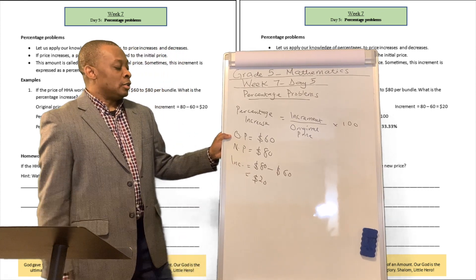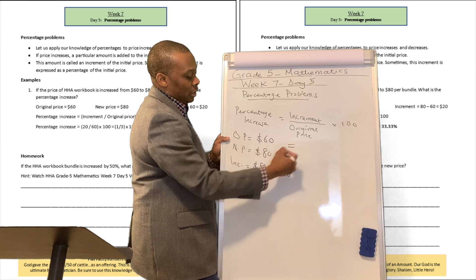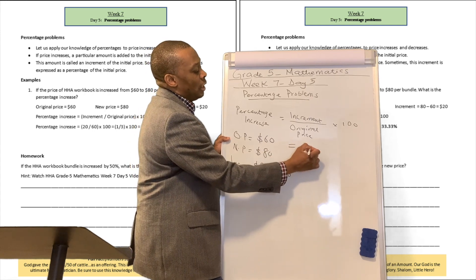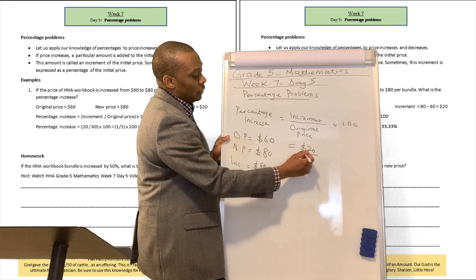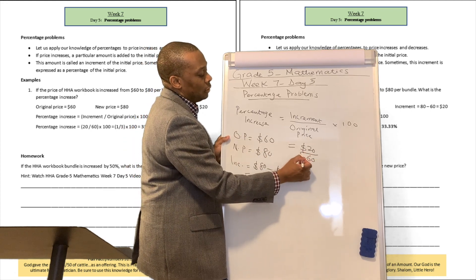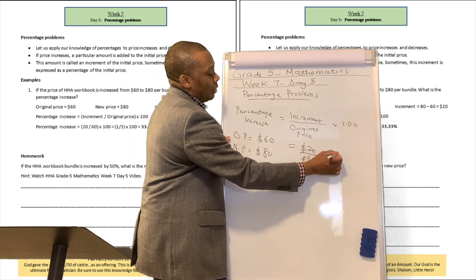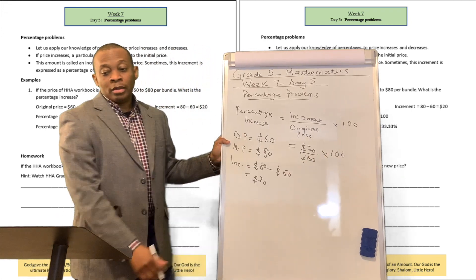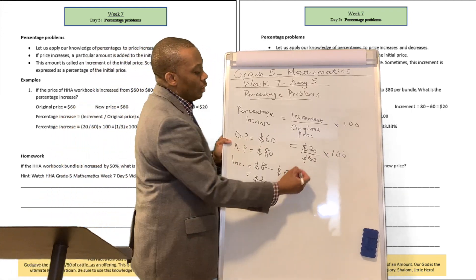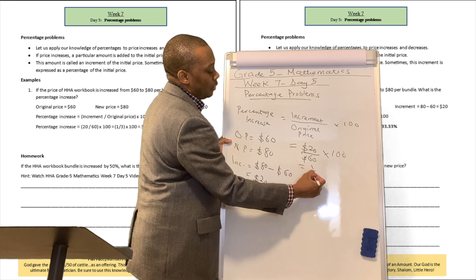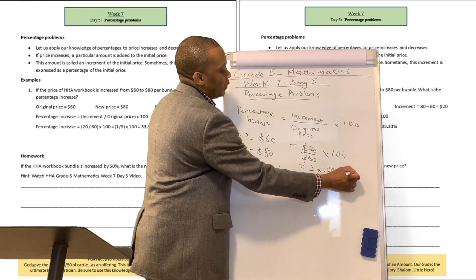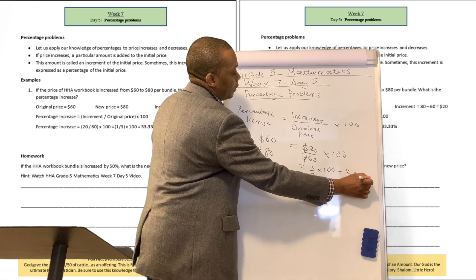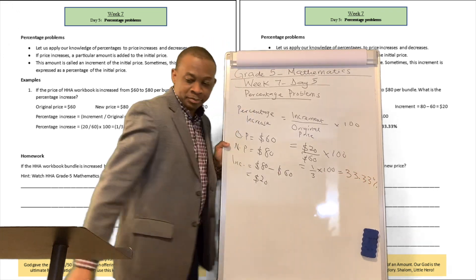All right, so we're going to plug all these figures into this formula. Increment is going to be equivalent to $20 divided by the original price, OP, which is $60, and then multiply it by 100. Okay, and when you do that, that's going to be one-third times 100, which is going to be equivalent to 33.33%.